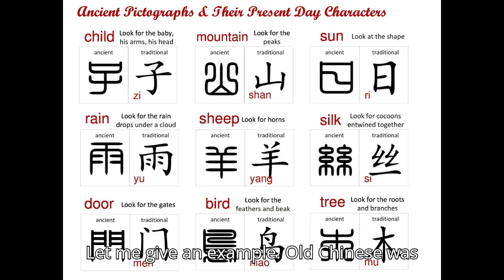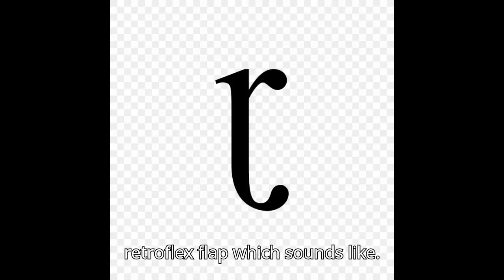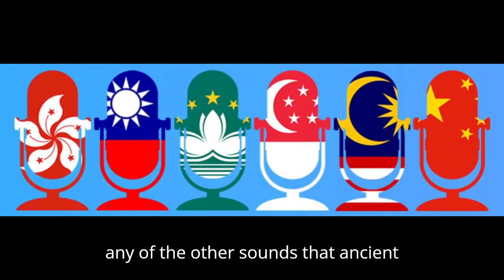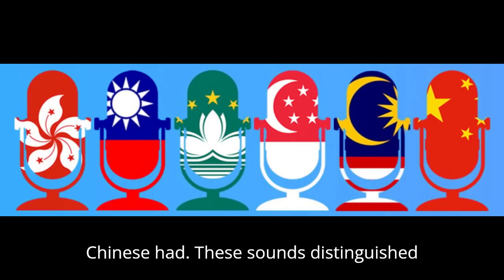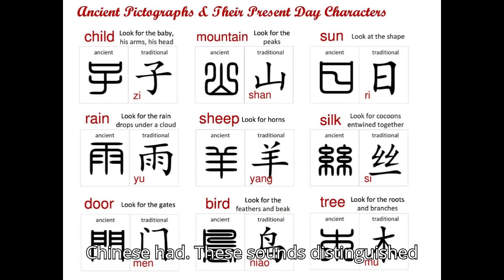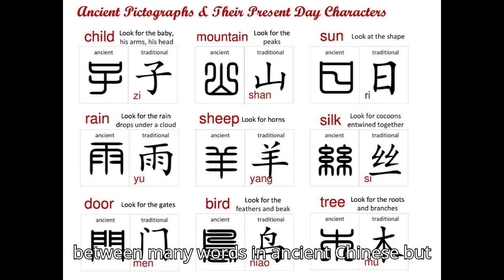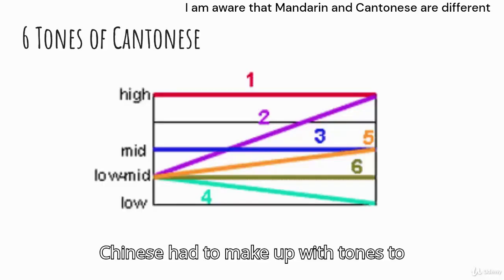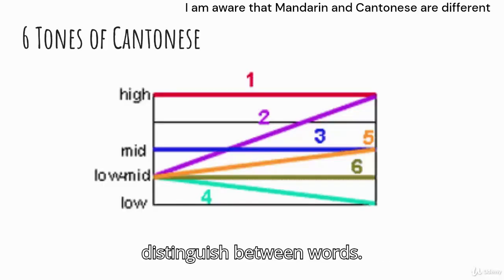For example, Old Chinese was not tonal, but it had sounds like a voiced retroflex flap. Modern Chinese doesn't have this sound or any of the other sounds that ancient Chinese had. These sounds distinguished between many words in ancient Chinese, but after this loss, modern and middle Chinese had to make up with tones to distinguish between words.